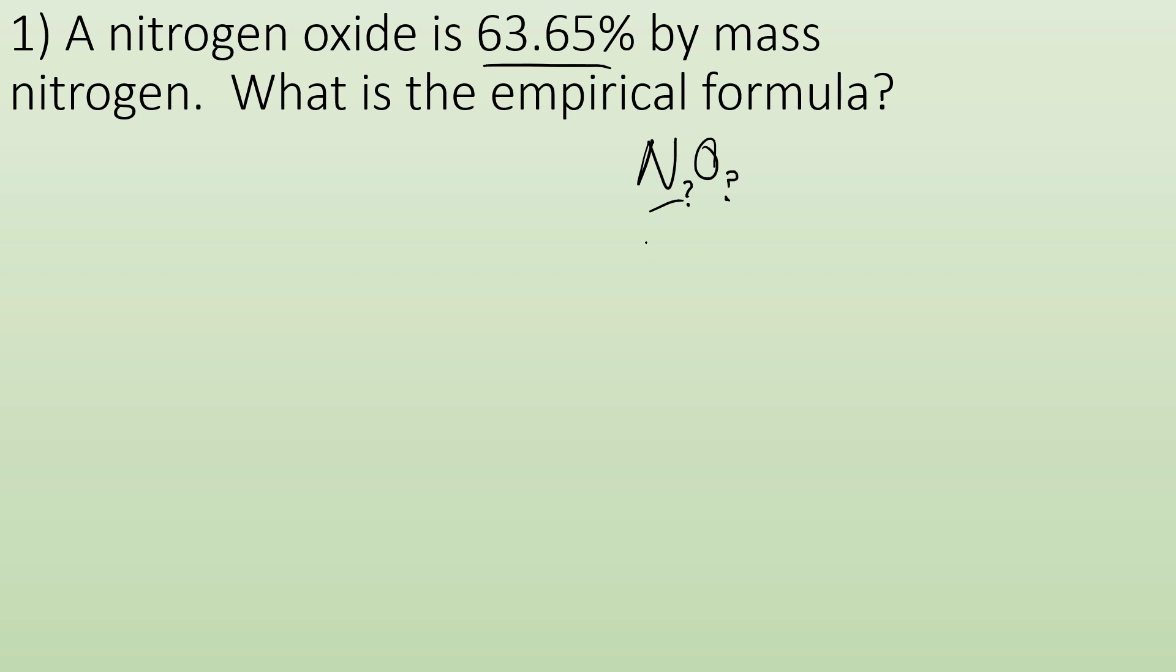Well in that case, I would have 63.65 grams of nitrogen and the rest of it would be oxygen. So I just do 100 minus 63.65 and I end up with 36.35 grams of oxygen.